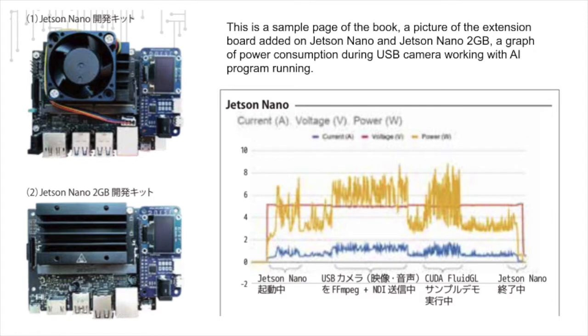This is a sample page of the book — a picture of the extension board added on Jetson Nano and Jetson Nano 2GB, and a graph of power consumption during USB camera working with an AI program running.